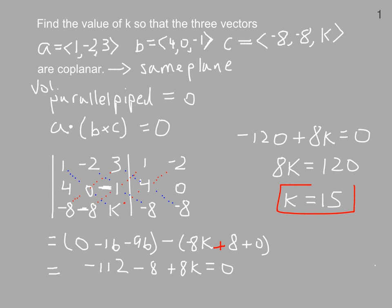When k is 15, the three vectors will be coplanar. Remember, the parallelepiped that's determined by the three vectors will have a zero volume.